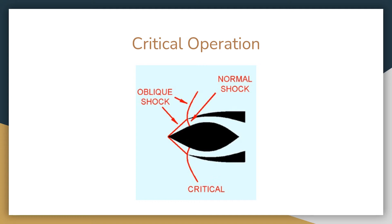The first condition is critical operation. Looking at the diagram, this is the inlet of the ramjet engine and this is the spike. Due to the supersonic flow, we have an oblique shock at the mouth — from the inlet section — and a normal shock is also formed at the face of the inlet, like this.